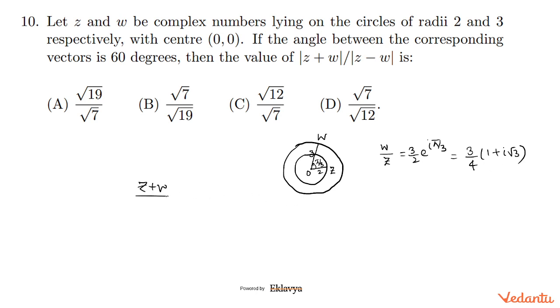|z+w|/|z-w|. We can write this as |(z/w + 1)/(z/w - 1)| by dividing numerator and denominator by w. Now z/w + 1 equals